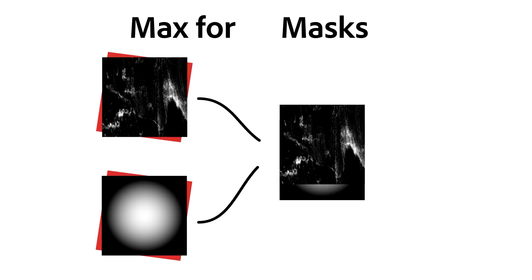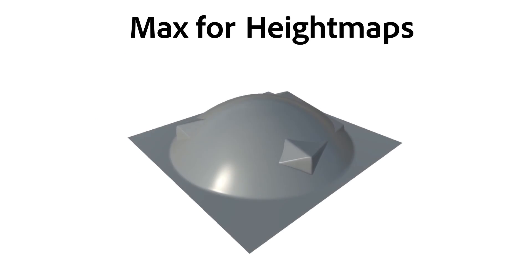Max combines the brightest parts of masks with a softer look than with the Add mode. Max works like a union operation on height maps, shoving them together and keeping the highest parts of both.